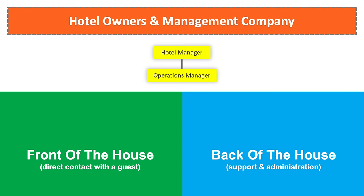When guests contact the hotel for the first time, they usually reach the front office department. It is a key department because the major part of revenue comes from room sales. The only exception is big convention hotels with huge meeting facilities that can generate a similar amount of revenue. Front office functions include reservation, reception, concierge, bell desk, and PBX service — that is, private branch exchange — basically a call center that handles all internal and external phone communications at the property.